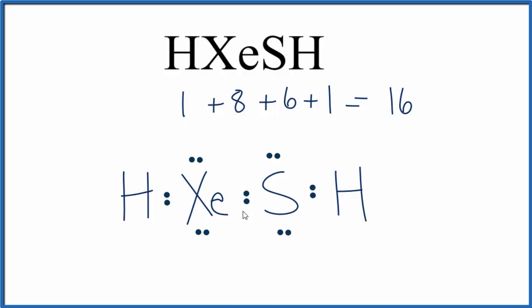However, xenon is able to have more than 8 valence electrons. It can have an expanded octet. So we can put those remaining two valence electrons right here on the xenon.